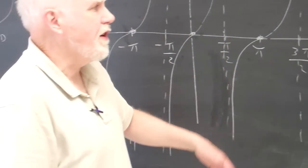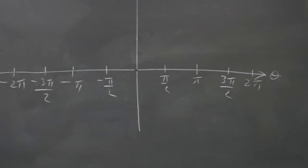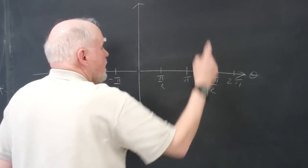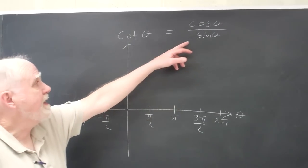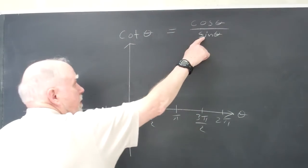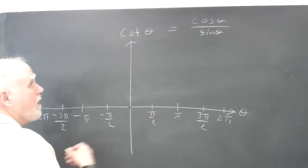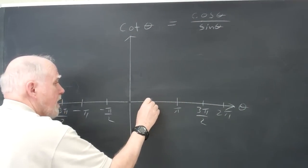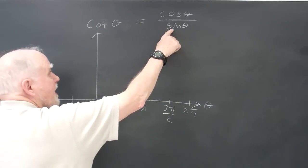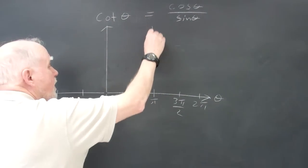Now looking at the cotangent — it's a very similar situation. The cotangent is cosine over sine. Wherever the cosine is zero and the sine is either negative one or one, we get a zero point. So at pi over two, the cosine is zero, giving us a zero point. At pi, the sine is zero and the cosine is negative one, so we have a vertical asymptote.